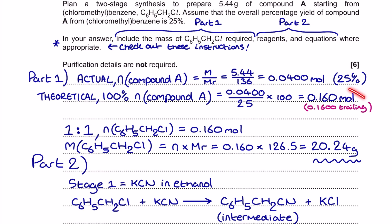What I'm looking to make therefore here is 0.160 mole of compound A. That's what I should aim to make and then the percentage yield takes over.